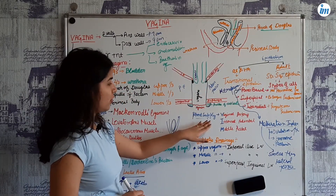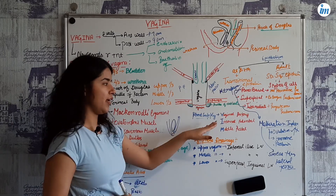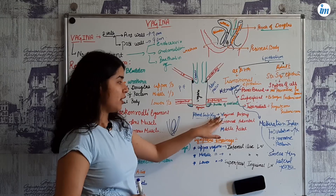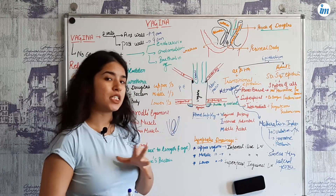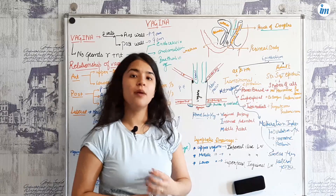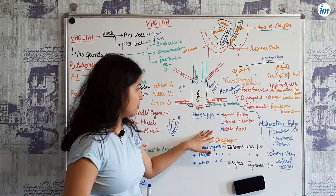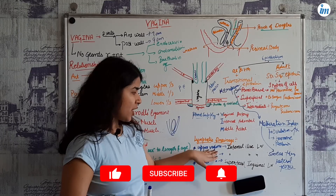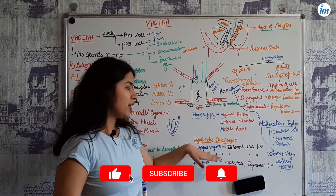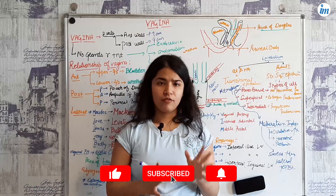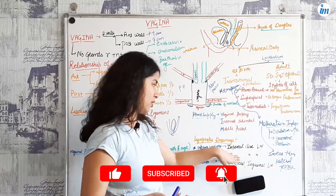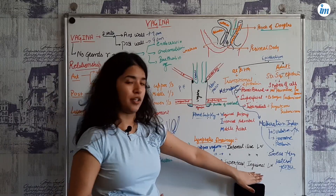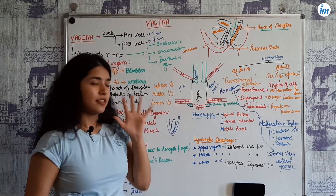For blood supply, remember the mnemonic VIM: V for the vaginal artery, I for the internal pudendal, and M for the middle rectal artery. For lymphatic drainage: the upper vagina drains to internal iliac nodes, the middle vagina also drains to internal iliac nodes, and the lower vagina drains to the superficial inguinal lymph nodes.